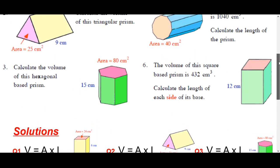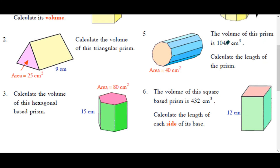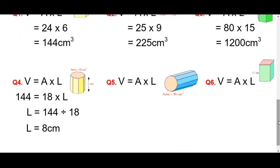Question 5 is just the same. It tells you the volume is 1040. It tells you the area. So basically, 40 times what makes 1040? You've got to work out the length. So exactly the same as question 4. We'll put the numbers in. So 40 times something makes 1040. Do the divide. And your answer is 26 cm.